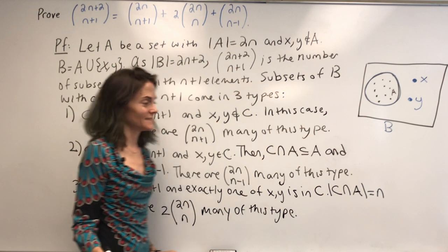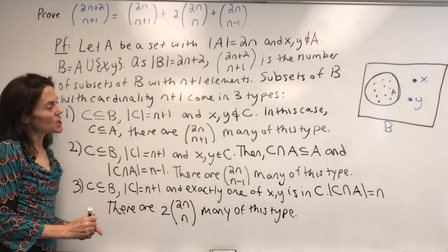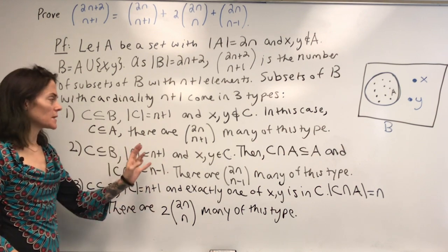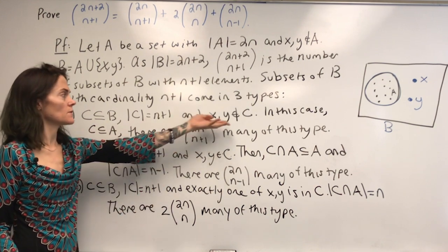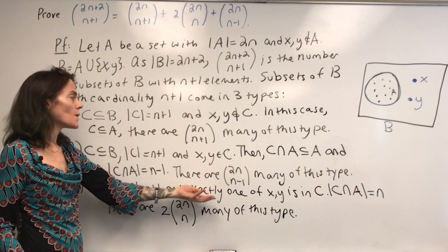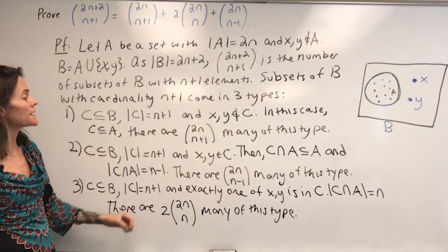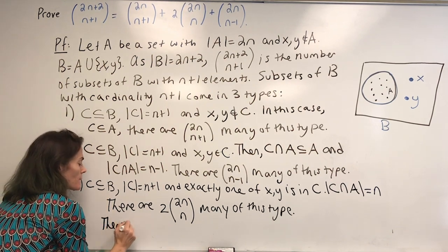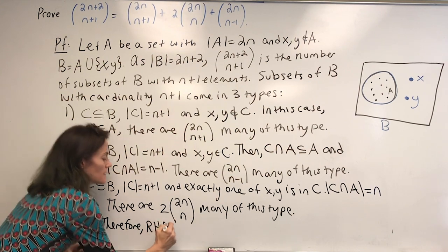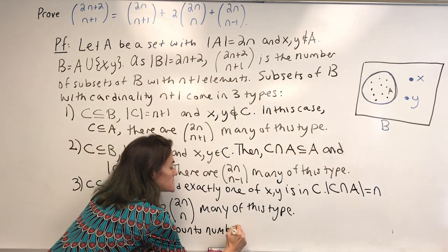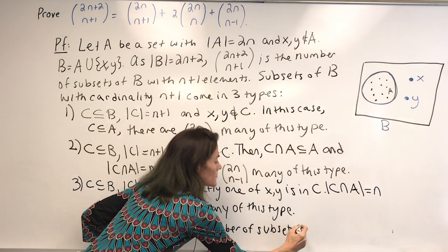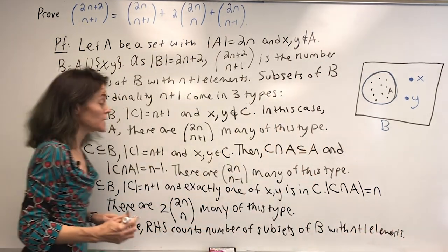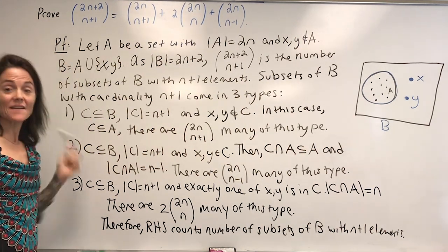You can see how we're finished. All of these types are different — no subset of n plus 1 elements can be in two types simultaneously, because either both x and y are in, or neither is in, or exactly one is in. So all types are disjoint and we can just add. Therefore, the right-hand side counts the number of subsets of B with n plus 1 elements, and this completes our proof, because we've already shown the left-hand side counts the same thing.